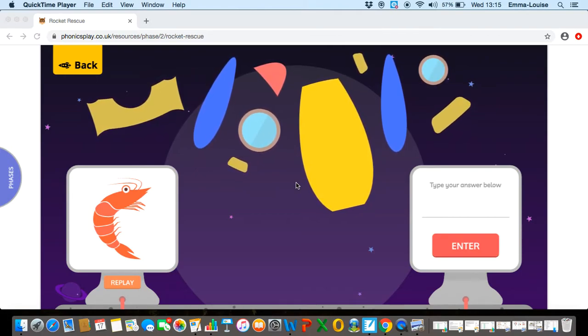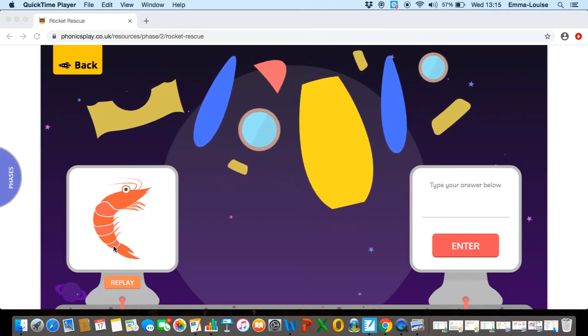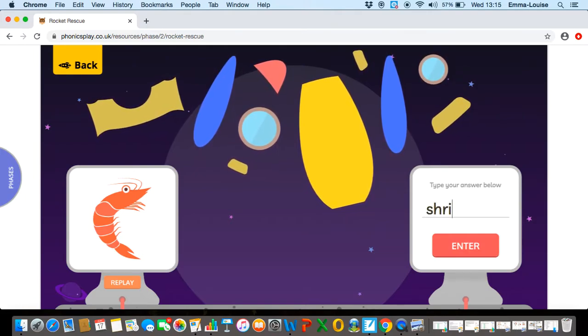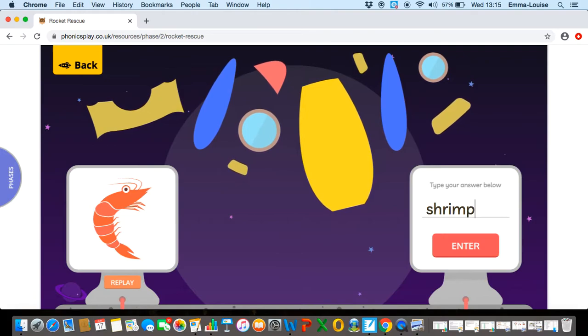Let's see if we can repair the broken rocket by sound talking the words linked to the pictures. Our first word we need to sound talk here is shrimp. Have those sound talking hands ready and sound talk with me. Sh-r-i-m-p. Shrimp.